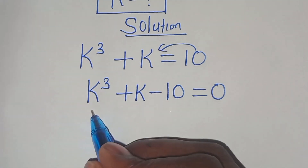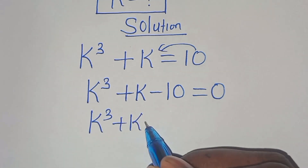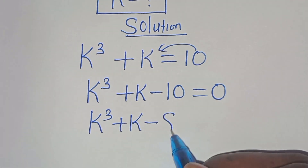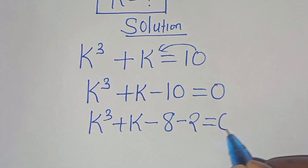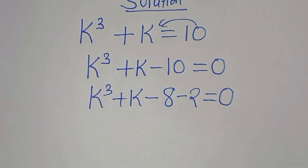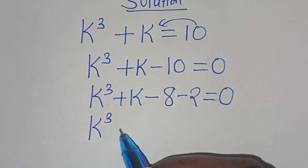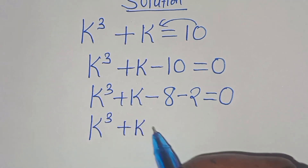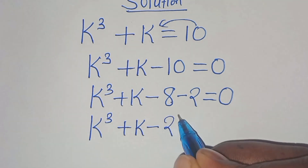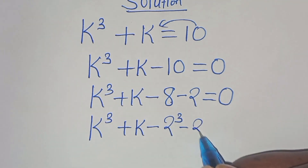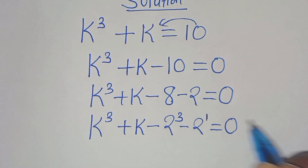Now, this is k to the power of 3 plus k minus 10, which is minus 8 minus 2, this is equal to 0. We have k to the power of 3 plus k, subtract 8 — we can express 8 as 2 to the power of 3 — minus 2, where 2 is 2 to the power of 1, so this is equal to 0.